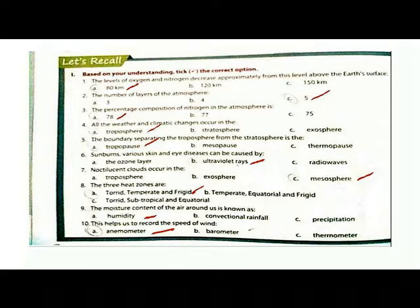Question 3: The percentage composition of nitrogen in the atmosphere is 78%. All the weather and climatic changes occur in the troposphere. Question 5: The boundary separating the stratosphere from the troposphere is the tropopause. Sunborne skin and eye diseases can be caused by ultraviolet rays.